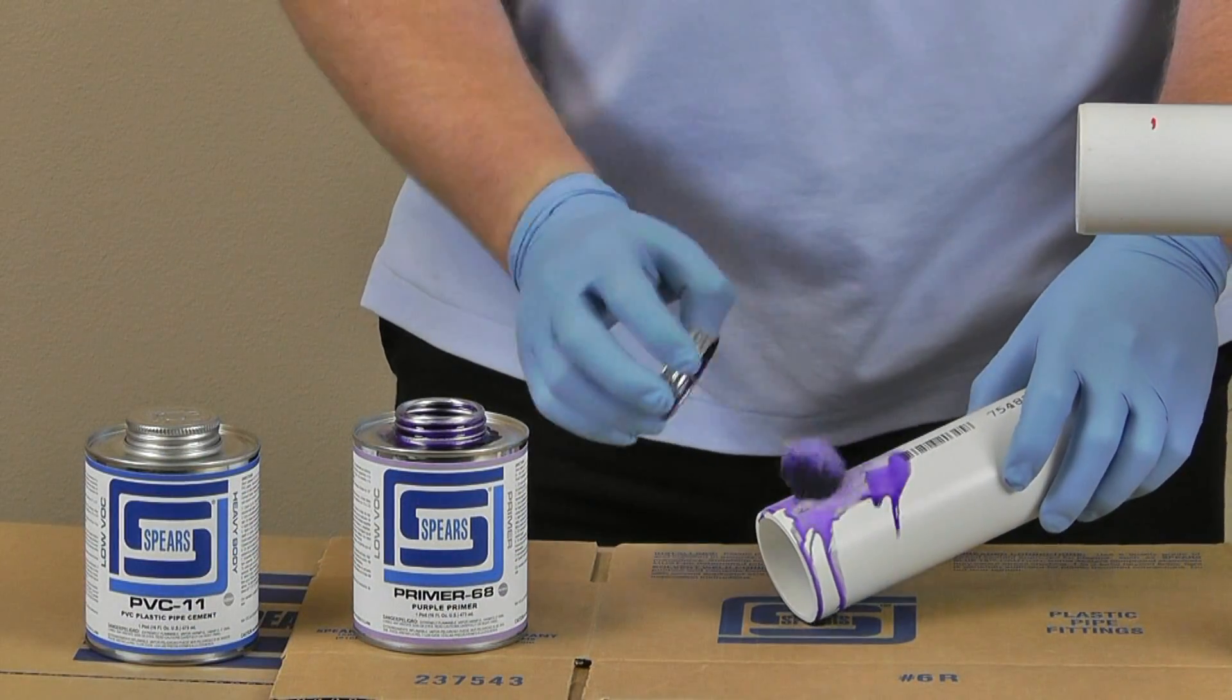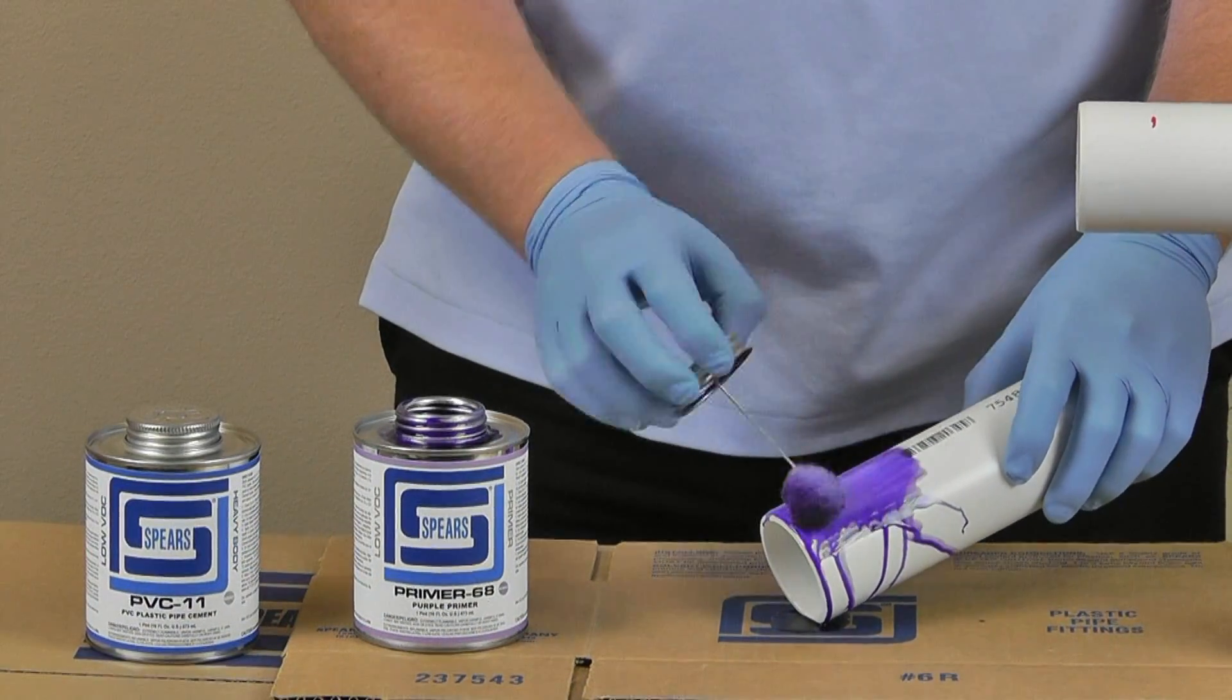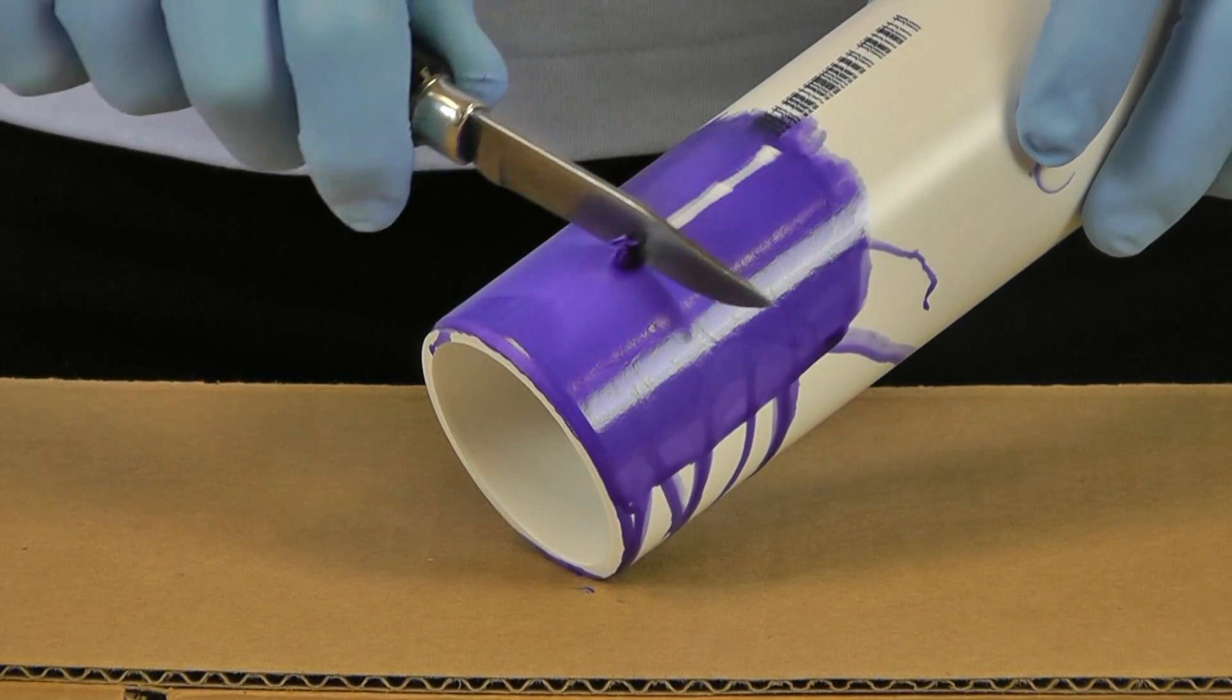Third, on a scrap piece of pipe, apply primer from the can you will be using. To check the softening ability, scrape a thin layer away from the pipe. This confirms your primer is still fresh and suitable for use.